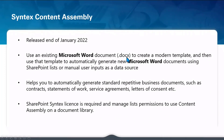About content assembly — it was released quite recently at the end of January this year. It enables you to use an existing Microsoft Word document to create a modern template and then use that template to automatically generate new Microsoft Word documents, using SharePoint lists or manual user inputs as a data source. So it helps you to automatically generate standard repetitive documents such as contracts, statements of work, or service agreements. A SharePoint Syntex license is required, and you also need managed list permissions on a library to use content assembly.